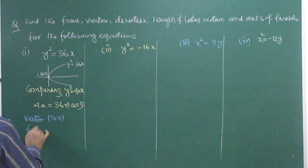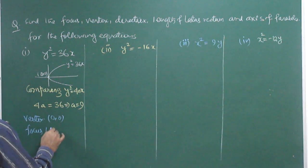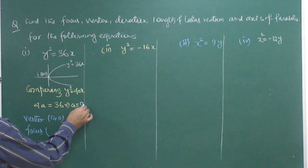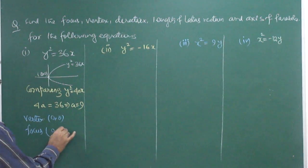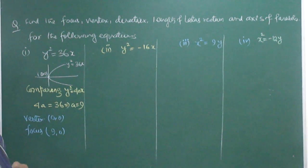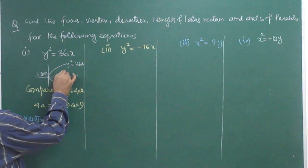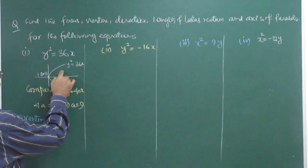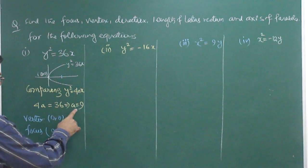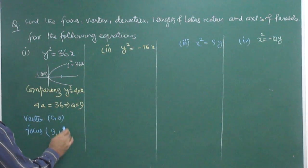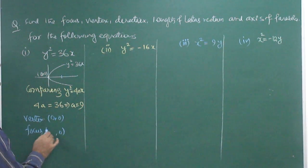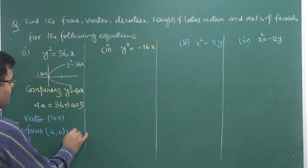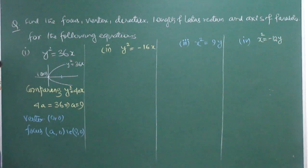Now the focus is (a, 0). And a is 9, so the focus would be (9, 0). Remember: whenever there is a parabola of this category, the focus is (a, 0), and here a = 9, so the focus is (9, 0).